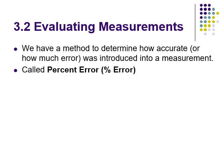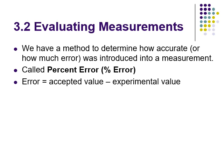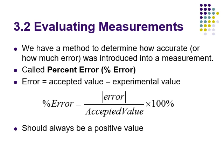Finally, there's a calculation called percent error, which tells you how well you did in a lab. The formula: error equals the accepted value — the real, true value — minus the experimental value, which is what you found in your experiment. The absolute value bars mean you ignore any negatives. Take the absolute value of that difference, divide by the accepted value, then multiply by 100 and add a percent sign — that gives you your percent error.